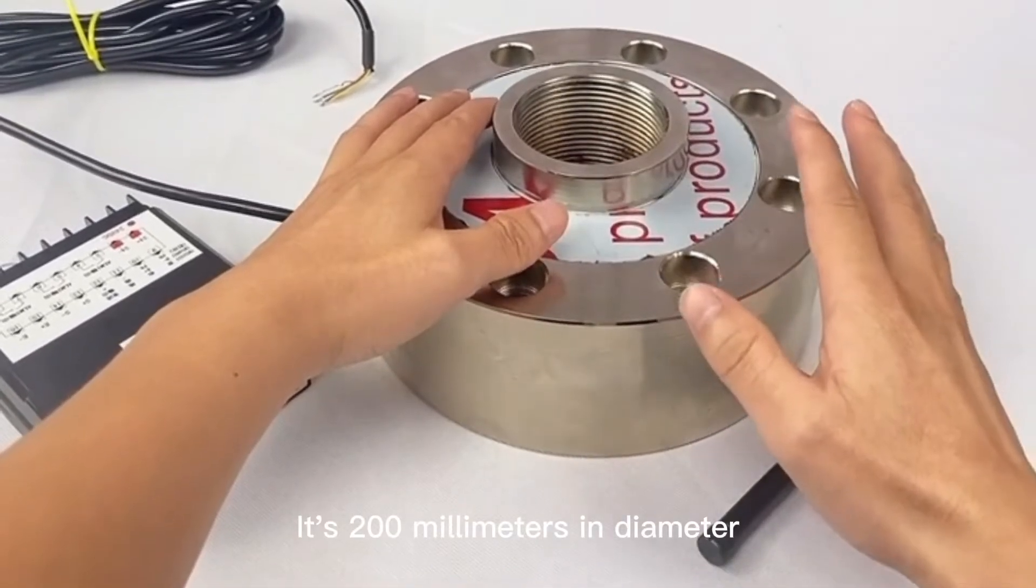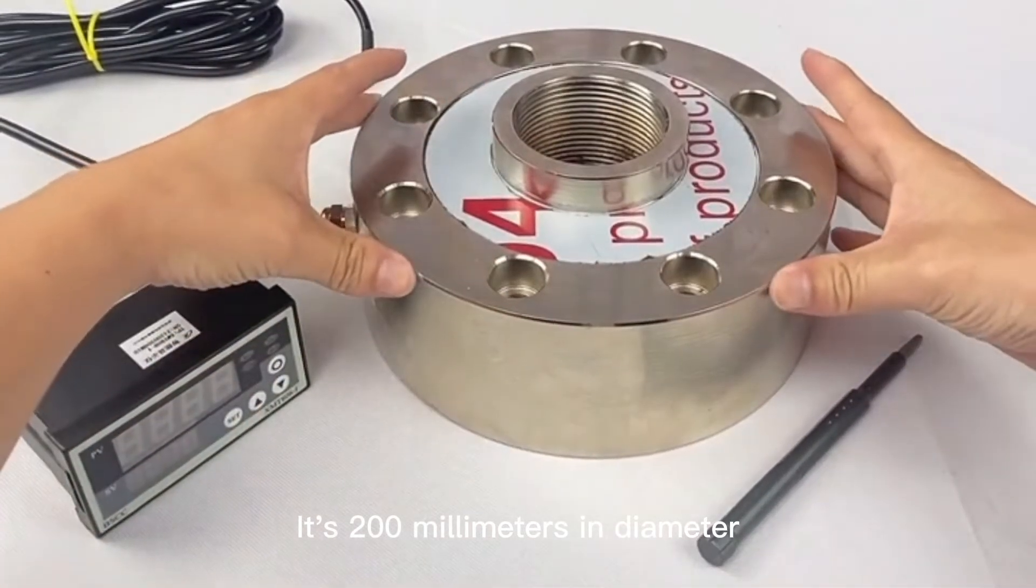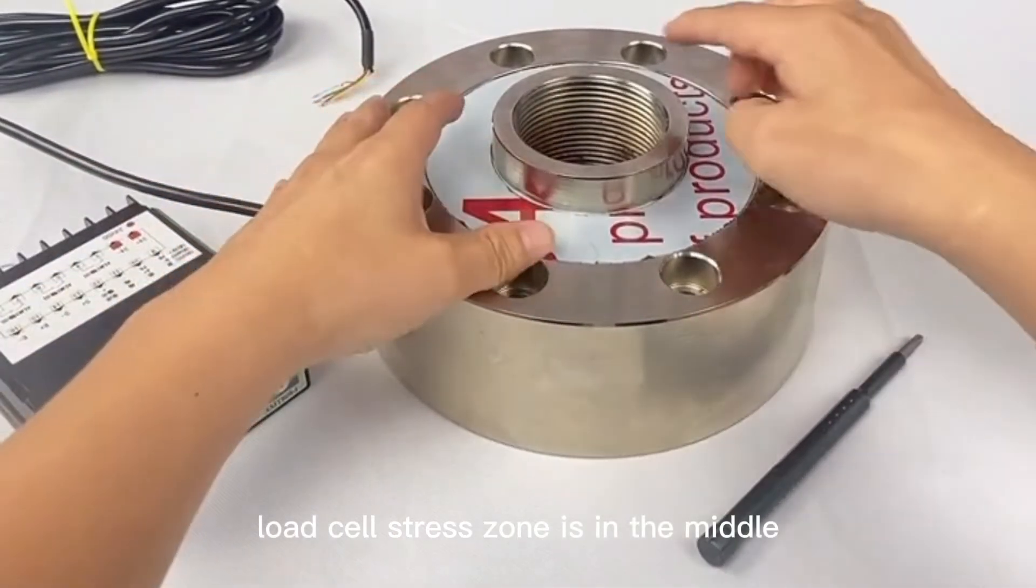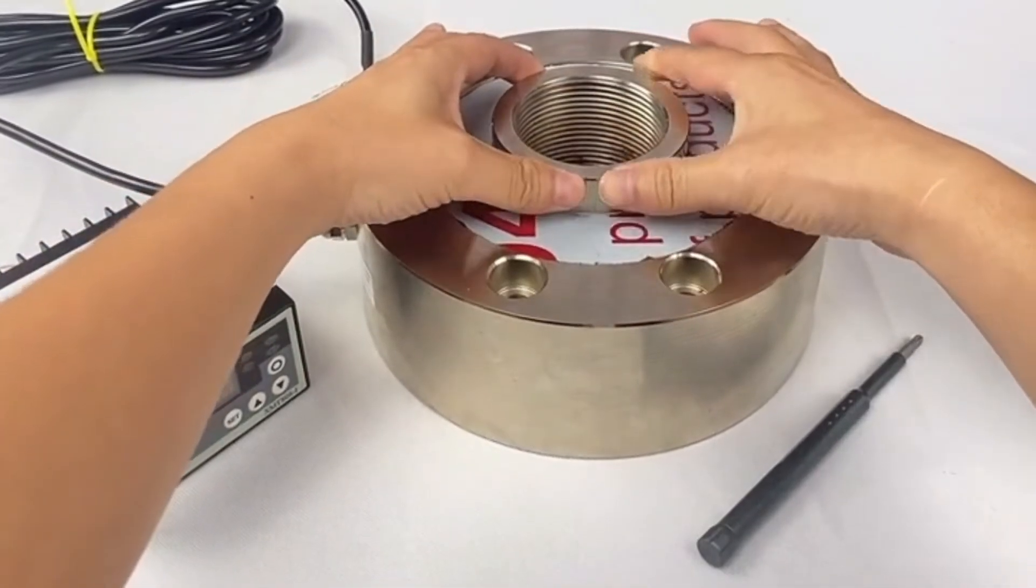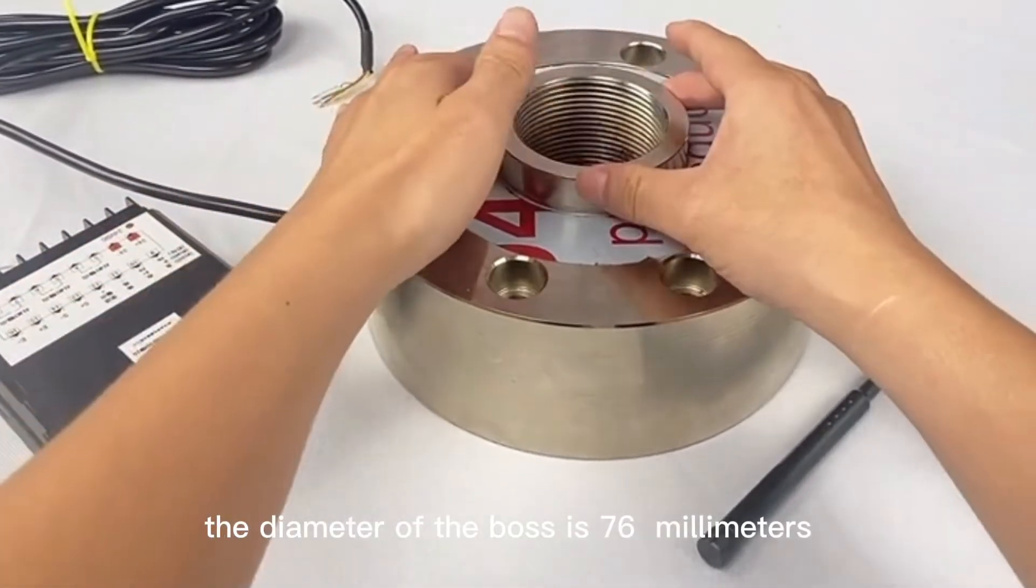It's 200 millimeters in diameter. The load cell stress zone is in the middle, the boss of this circle. The diameter of the boss is 76 millimeters.